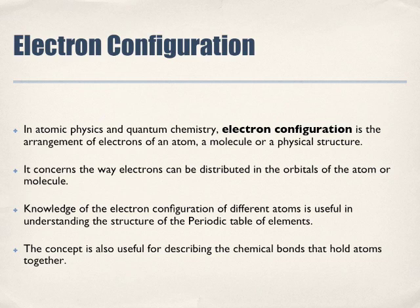Knowledge of the electron configuration of different atoms is useful in understanding the structure of the periodic table of elements. So we're going to look at the elements of the periodic table, see why they're drawn in the order that they're drawn, based on the different energy levels. So the concept is also useful for describing the chemical bonds that hold atoms together.